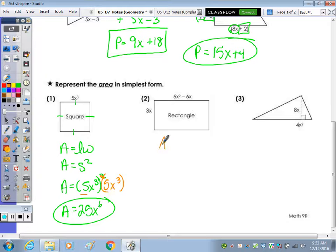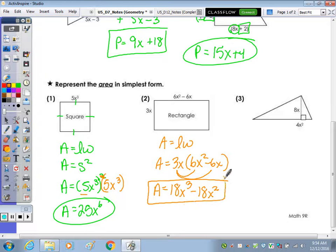Area for a rectangle is length times width. I always like to write the monomial first in order. Distributing that through, 3 times 6 is 18, x times x squared is x cubed. 3 times negative 6 is negative 18 again, and x times x is x squared. So the area is 18x cubed minus 18x squared. When multiplying we add exponents, but power to power we multiply the exponents.